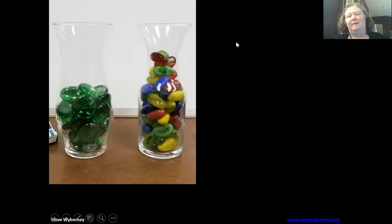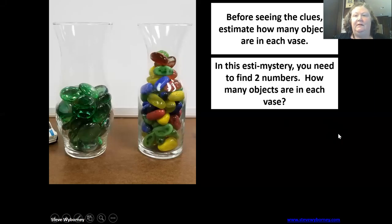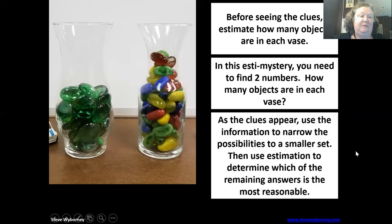Okay, so today for our estimation we have two jars we're looking at and we're going to have some clues about those two jars. Before you see the clues, I want you to try to make an estimate of how many you think are in each. Your estimate today is going to be two different numbers, and as the clues appear on the next page you're going to have a chance to narrow down your estimate based on the clues.